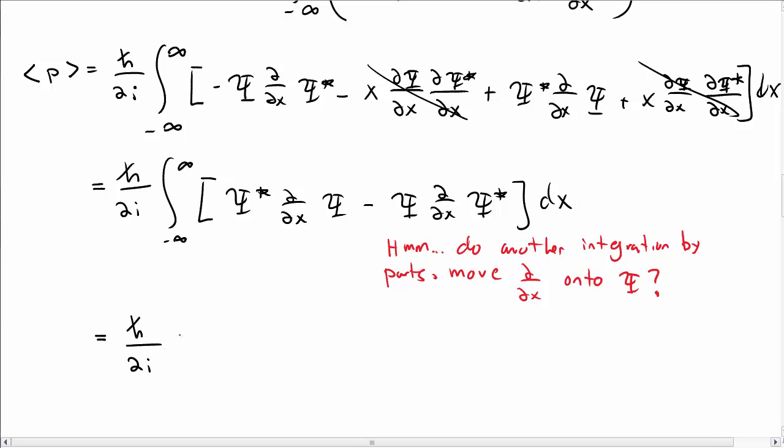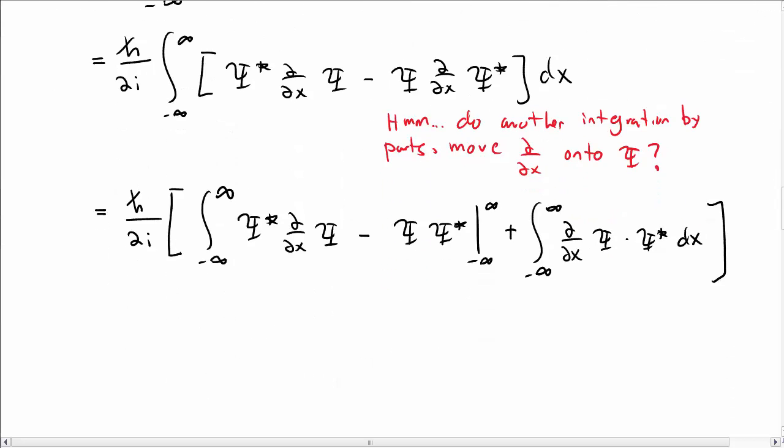So doing that, we have just rewriting my first term psi star x derivative of psi minus, and so here's the boundary term and then the integral term that I get from integration by parts, d by dx of psi times psi star dx. Again, this boundary term is going to go to zero. And now, hey look, those two integrals look the same. In fact, they are the same. So I get a factor of two which cancels the one half. So I just get this.